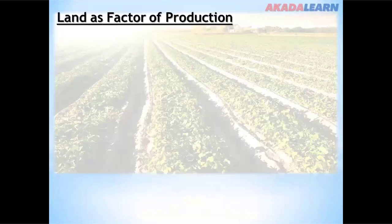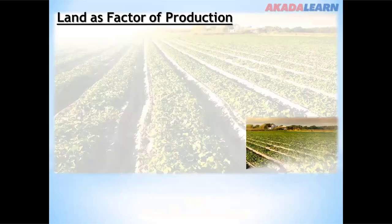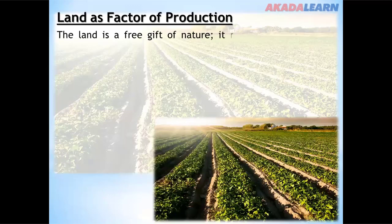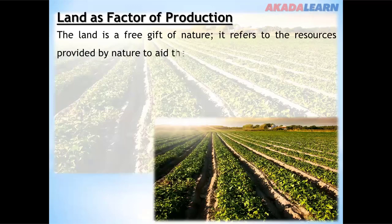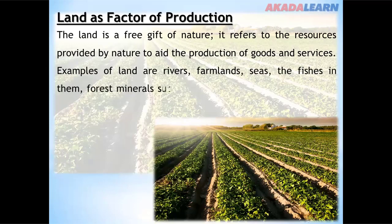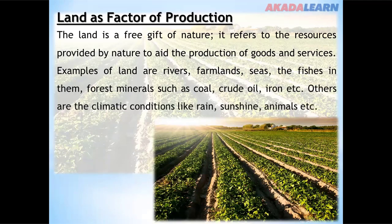Let's start with land as a factor of production. Land is a free gift of nature; it refers to the resources provided by nature to aid the production of goods and services. Examples of land include rivers, farmlands, seas, the fish in them, forests, and minerals such as coal, crude oil, and iron. Others include climatic conditions like rainfall and sunshine, animals, and plants.